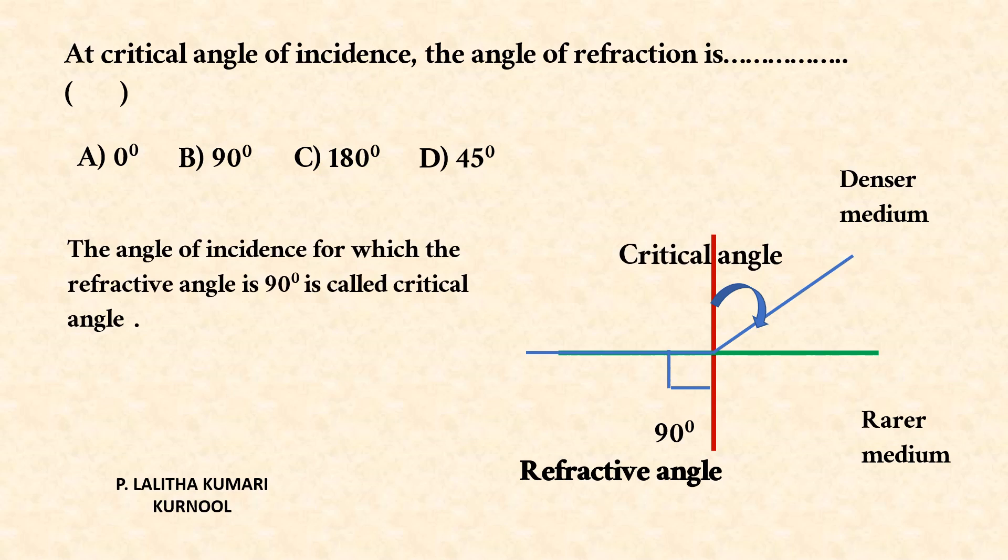It means the angle of incidence for which the refractive angle is 90 degrees is called critical angle. So, correct answer is 90 degrees, that is B. Thank you.